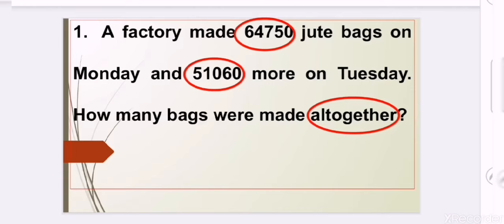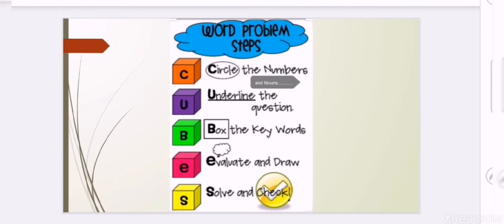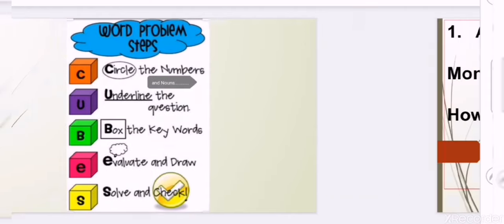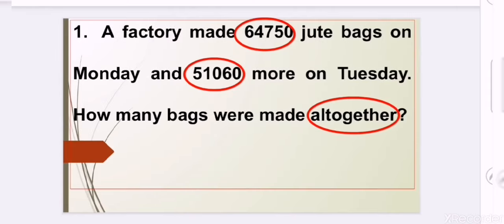After that, the next step: U stands for 'underline the question.' The question starts from 'How many bags were made all together?' So the whole question will be underlined, starting from 'how many' and ending at 'all together.'